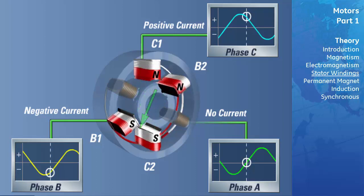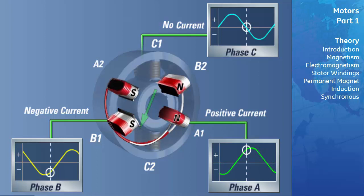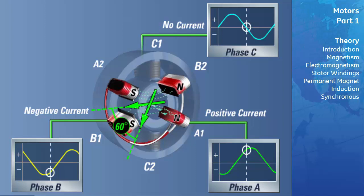The resultant vector shown is the vector sum of the magnetic fields formed between the C and B poles. If we repeat this evaluation 60 degrees later, phase C will have zero current flow. Phase B has current flow in the negative direction, and phase A has current flow in the positive direction. With reference to our convention, A1 and B2 will be north poles, while A2 and B1 will be south poles. The magnetic lines of flux will leave at the north pole of A1 and enter the nearest south pole at B1, and also leave B2 and enter the nearest south pole at A2. The resultant vector sum of the magnetic fields is shown here.